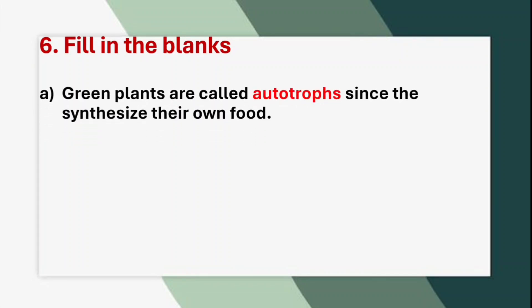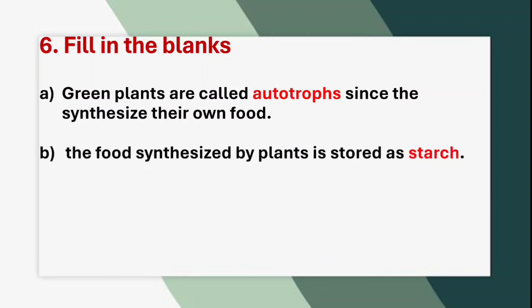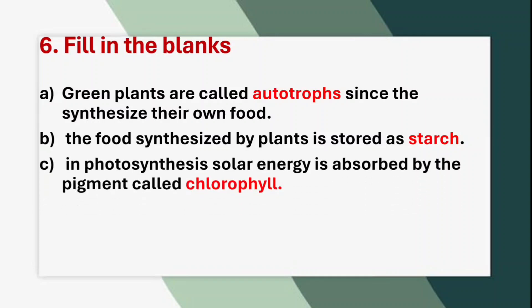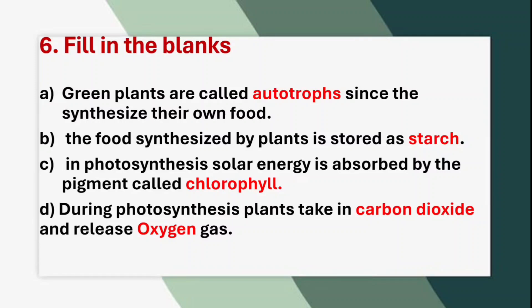Sixth question — Fill in the blanks. (A) Green plants are called __ since they synthesize their own food. Answer: Autotrophs. (B) The food synthesized by plants is stored as __. Answer: Starch. (C) In photosynthesis, solar energy is absorbed by the pigment called __. Answer: Chlorophyll. (D) During photosynthesis, plants take in __ and release __ gas. Answer: Carbon dioxide and oxygen.